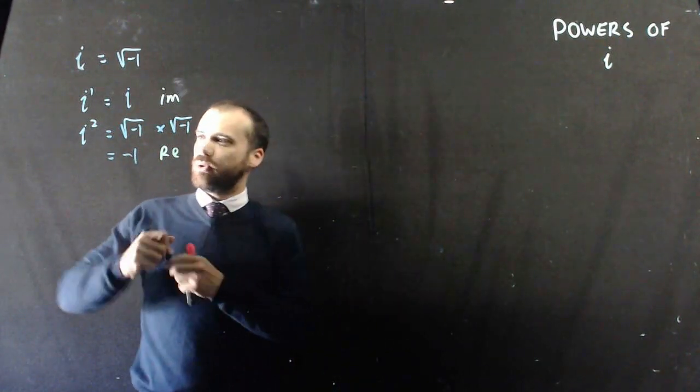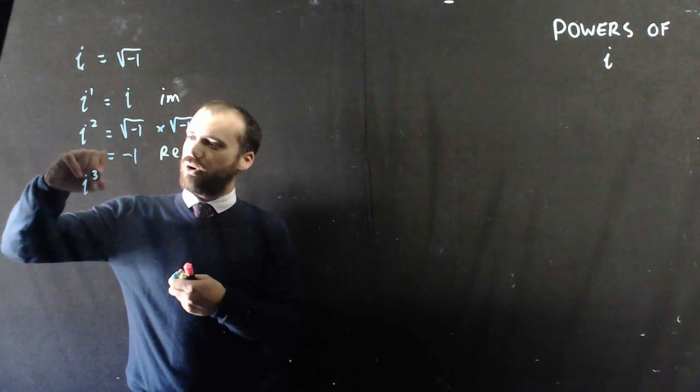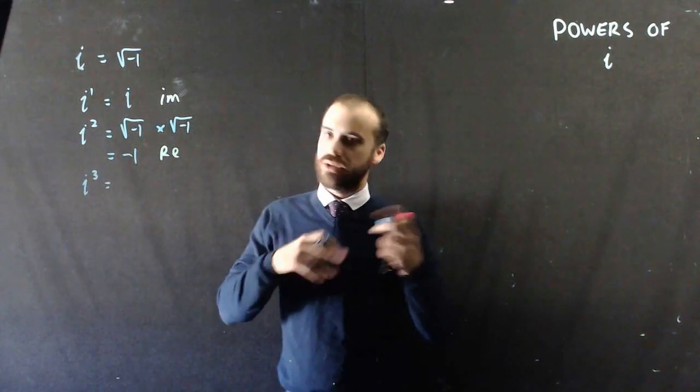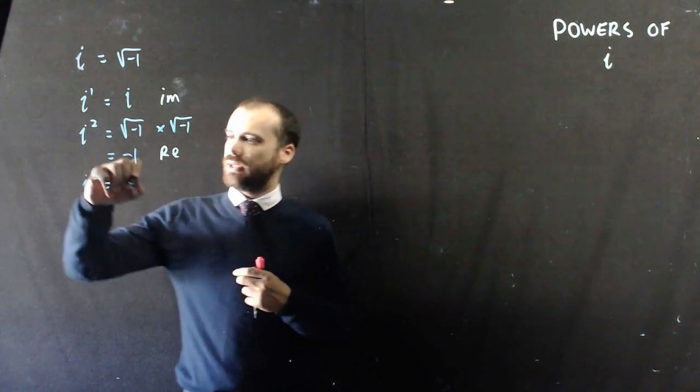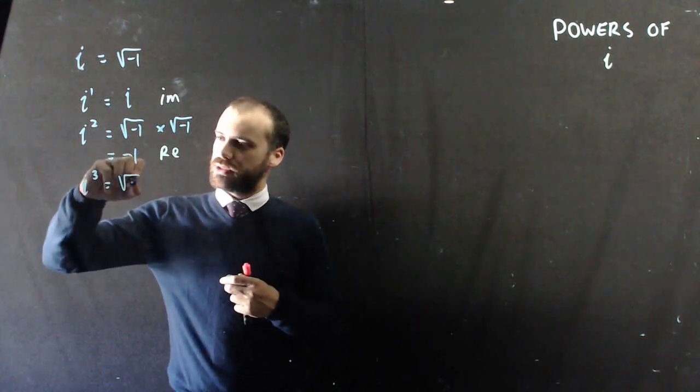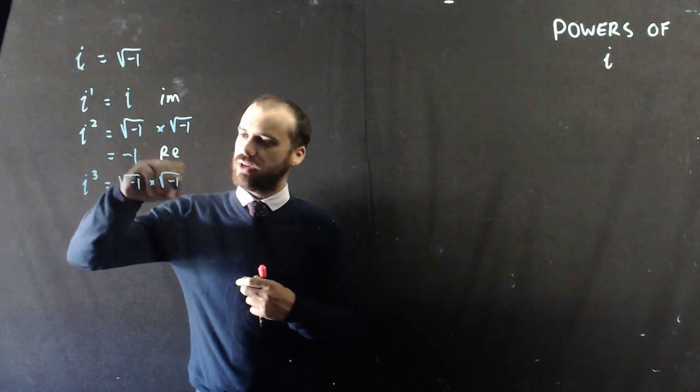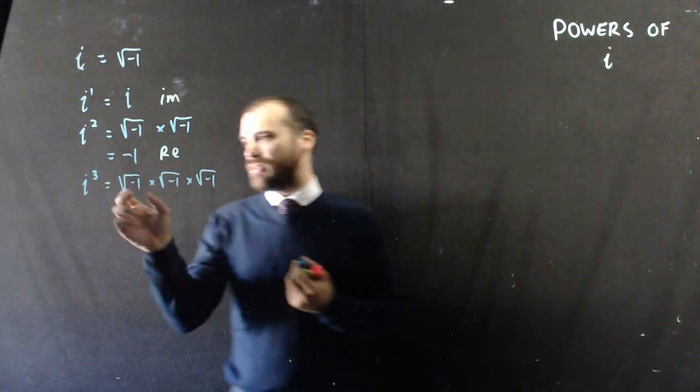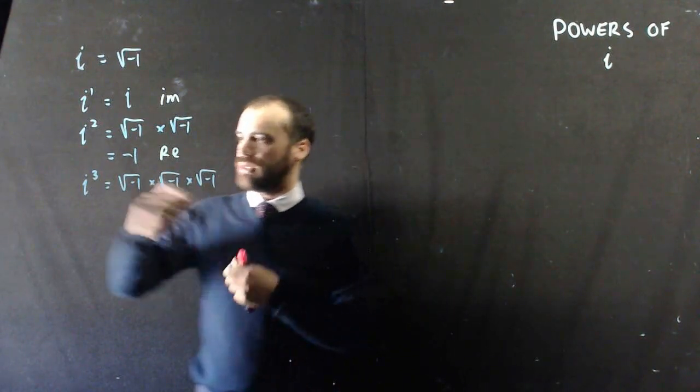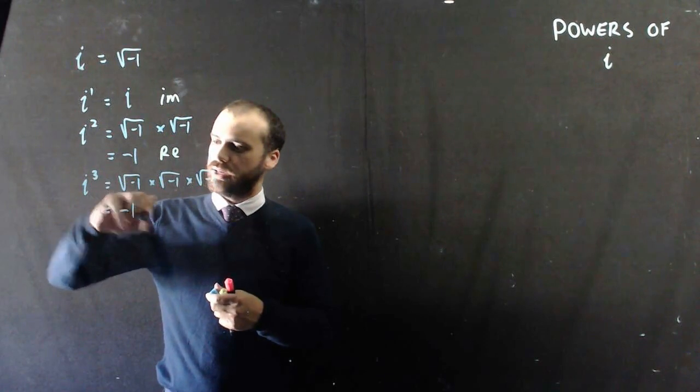Now, you might want to pause it and think for a moment about what i cubed is. Pause it or not. So, i cubed, what happens here? Well, i cubed is the same as the square root of negative 1 times the square root of negative 1 times the square root of negative 1. Now, we've already ascertained that the square root of negative 1 times the square root of negative 1 is negative 1.